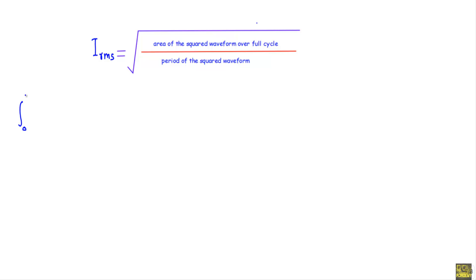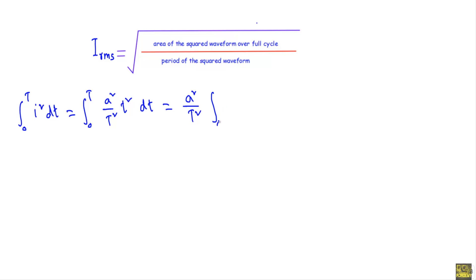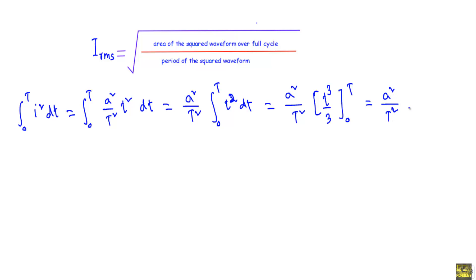The area equals the integration from zero to T of i² dt. Here i² is given by (A² / T²) · t², so I get (A² / T²) times the integral from 0 to T of t² dt. This gives (A² / T²) · [t³ / 3] evaluated from 0 to T, which equals (A² / T²) · (T³ / 3 − 0).